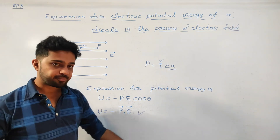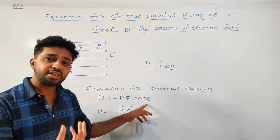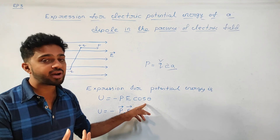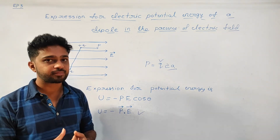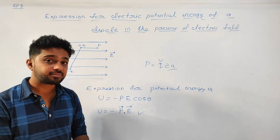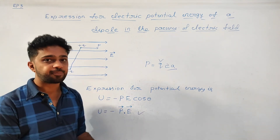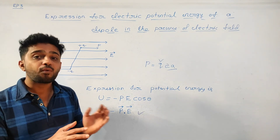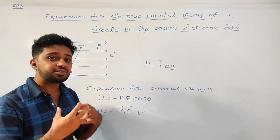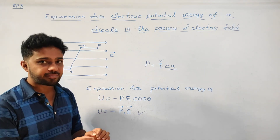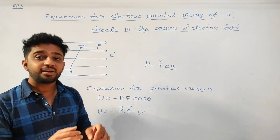Potential energy is maximum and minimum depending on theta. When theta equals zero degrees, cos theta equals 1, so U equals minus PE — this is the minimum potential energy. When theta equals 180 degrees, cos 180 equals minus 1, so U equals plus PE — this is the maximum potential energy. So minimum potential energy occurs when the angle between dipole moment and electric field is 0 degrees, and maximum potential energy occurs when the angle is 180 degrees.